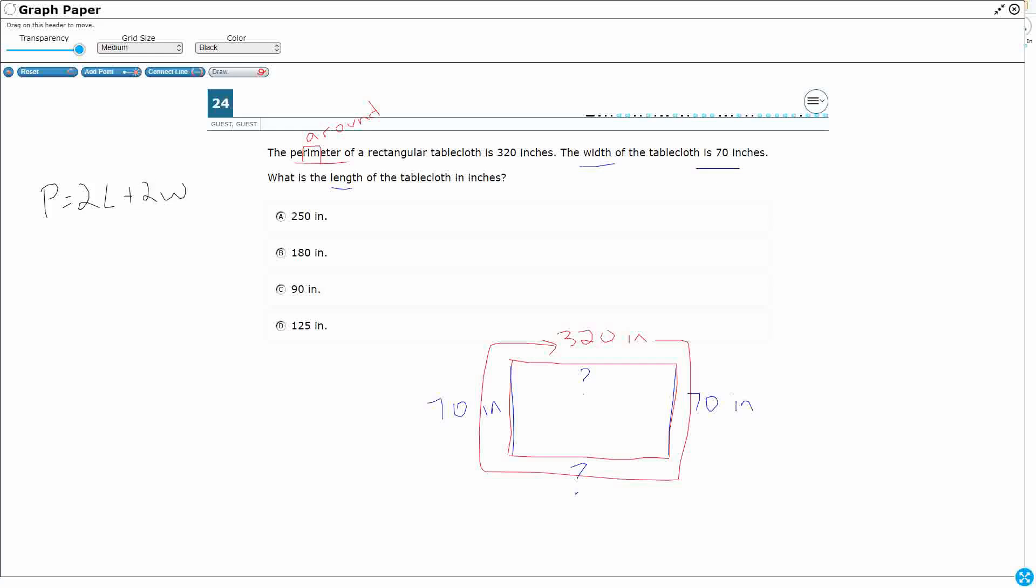Well, I know what some of these quantities are. The perimeter, they already told us, that's the P, is 320. So I'm going to replace the P with 320. The length is what we're looking for, so that's the L. We do know what that width is. It's 70. I'm going to replace that W with 70.